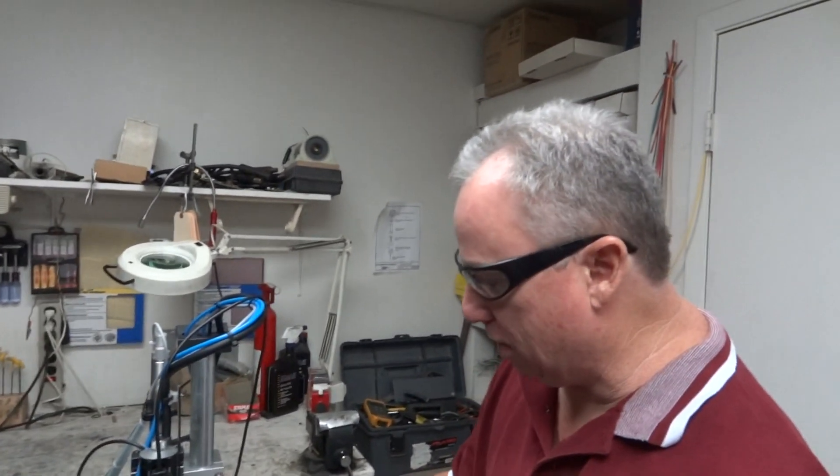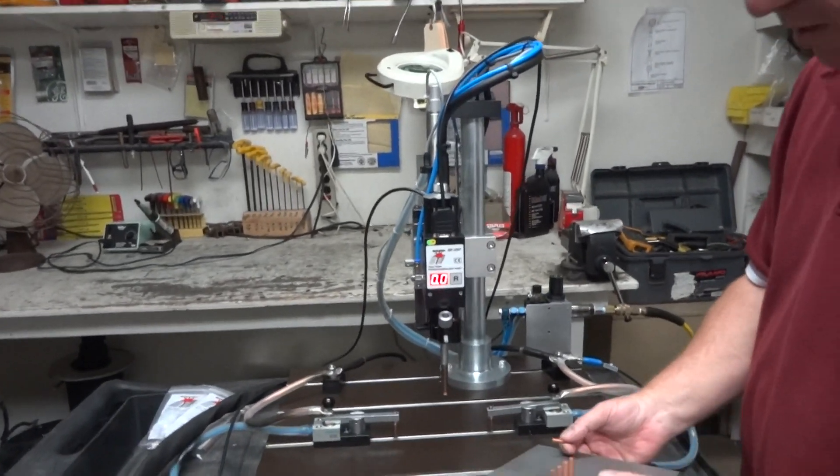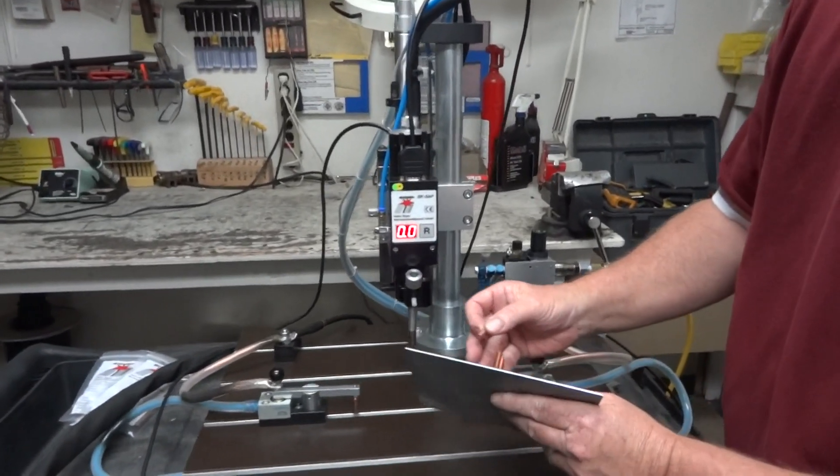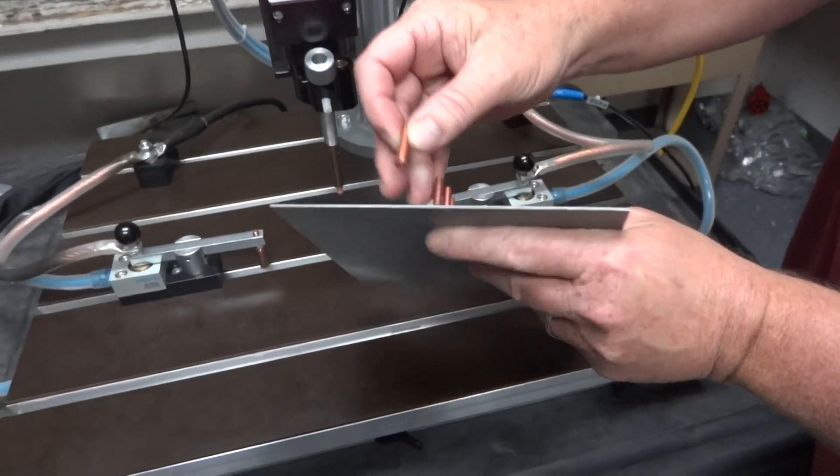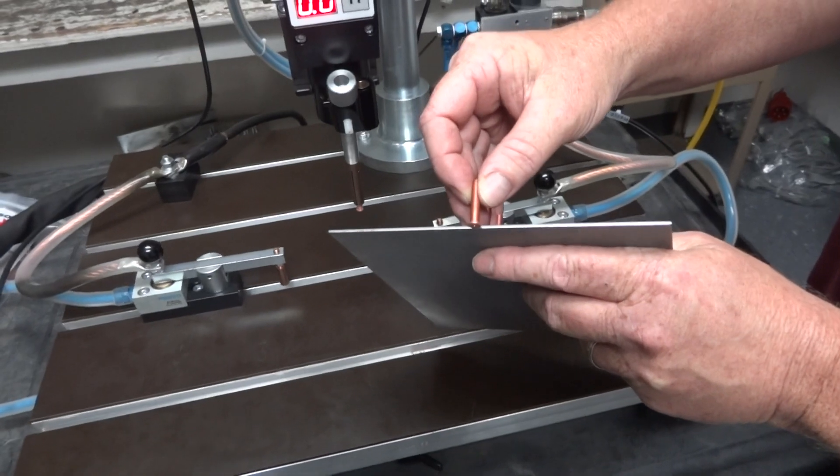Alright, the next thing we're going to do is adjust the weld head. There's actually two adjustments we need to make on it. The first is the immersion depth. Theoretically, we want that stud, the flange on the stud, to be immersed into the material we're welding to about two millimeters.